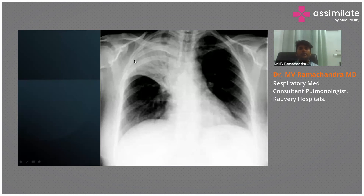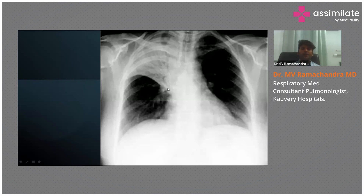On radiology, the chest X-ray is a PA view. What we can see is a right upper lobe homogeneous opacity with a fissural demarcation — pneumonia tends to limit itself to the fissure. We can also find air bronchograms.